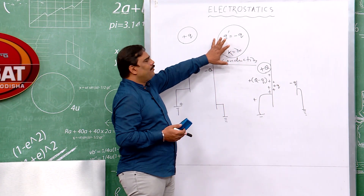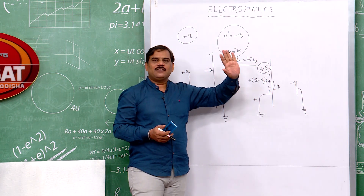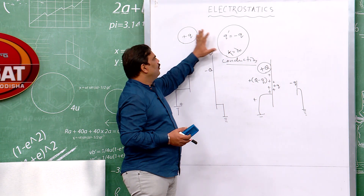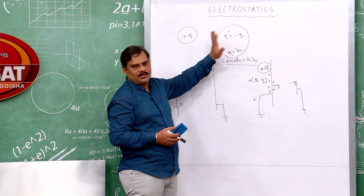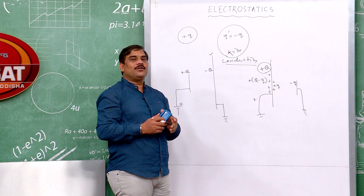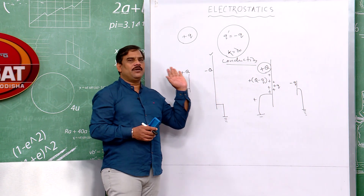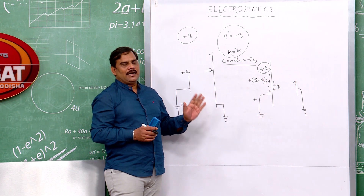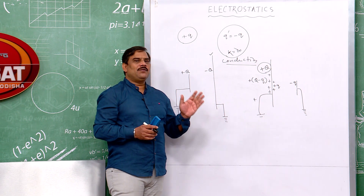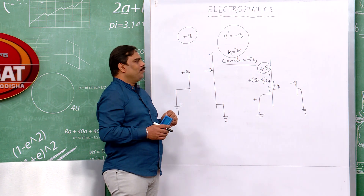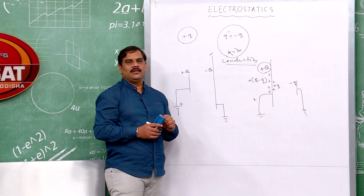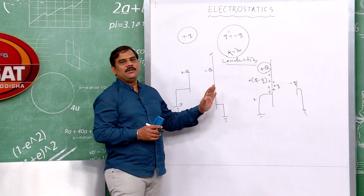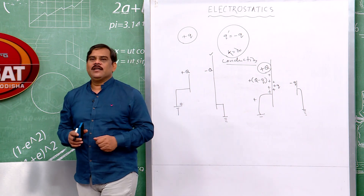Let us summarize induction. In induction, opposite polarity charges are developed. The magnitude of charge developed is given by Q = Q₀(1 - 1/K). K is infinity for conductors, and therefore equal and opposite charge will be induced in the case of conductors only. But it still depends on the size and capacity of the conductor to develop charges.